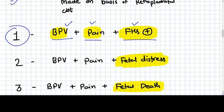Number two is bleeding PV, pain in abdomen, but fetal status is not very good. Fetal distress is there. So it's a category two.